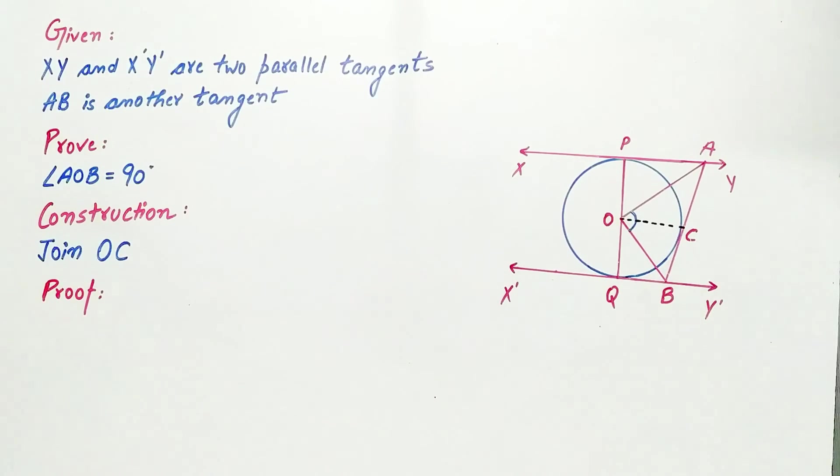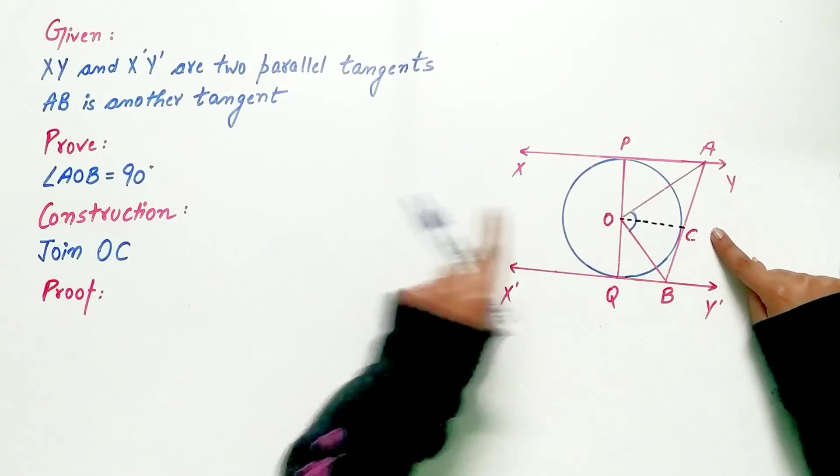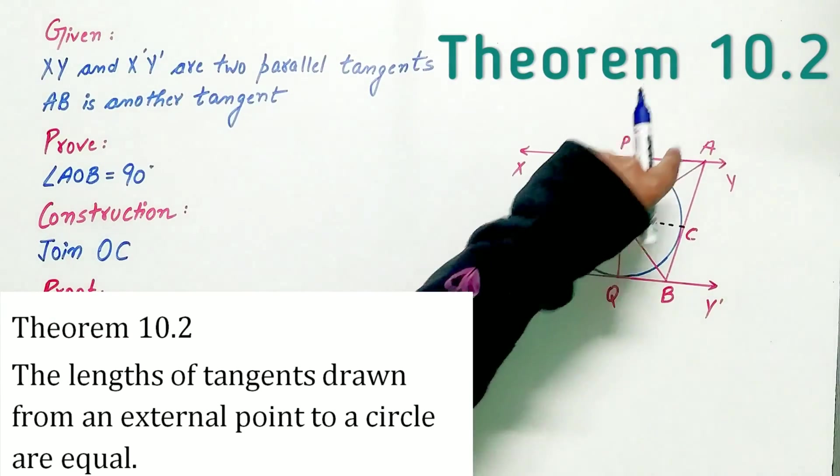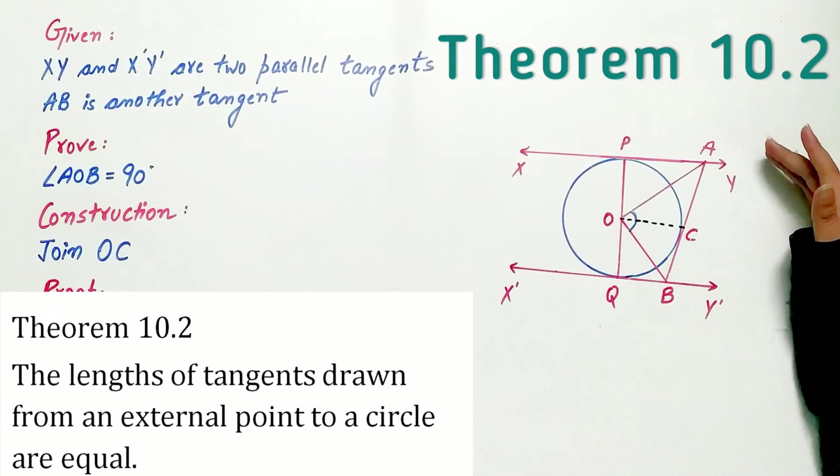Construction: The very first step would be to join O and C. Now look carefully. A is an external point, that is it lies outside the circle.